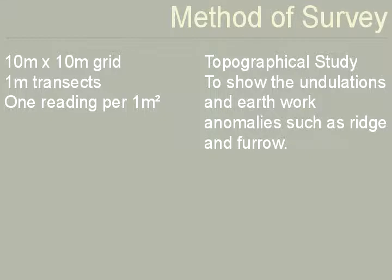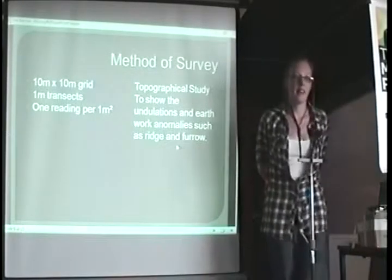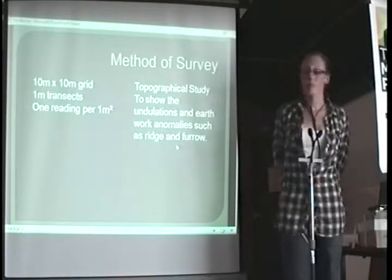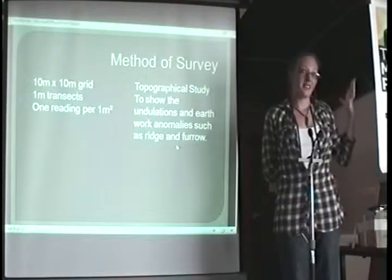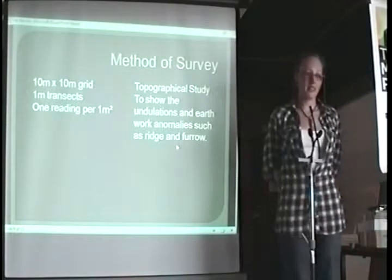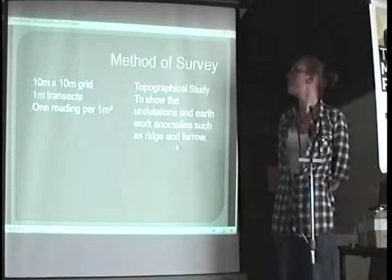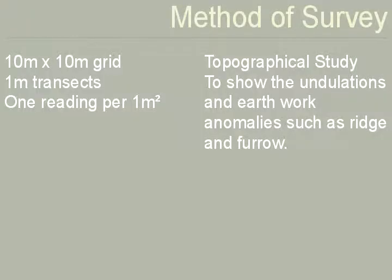Typically geophysical studies like this would be initially carried out on a 10 by 10 metre grid with 1 metre transects and a reading per 1 metre square. However, for the sake of the mound which is outside it is rather large so we did a 30 by 30 metre grid with 1 metre transects and we measured every 0.5 metres, so every half metre. Added to the topographical study, it shows the undulations and mainly the ridge and furrow which is distributed across the site on a whole.